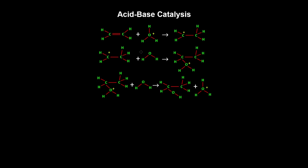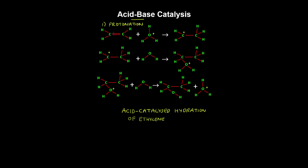Some catalysts involve covalent bonding between the catalyst and the reactants, and a prime example is acid-base catalysis. A specific example is the acid-catalyzed hydration of ethylene. Step one involves the protonation of the double bond in ethylene.